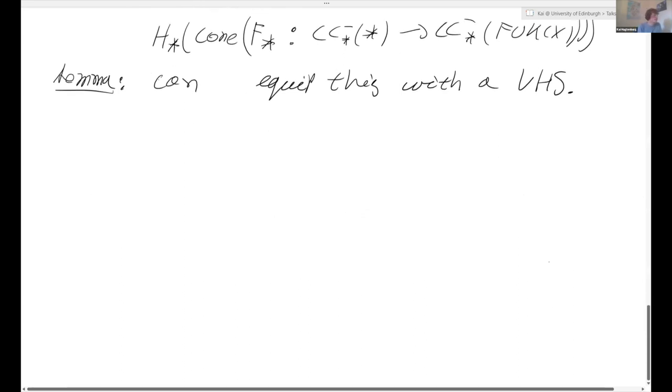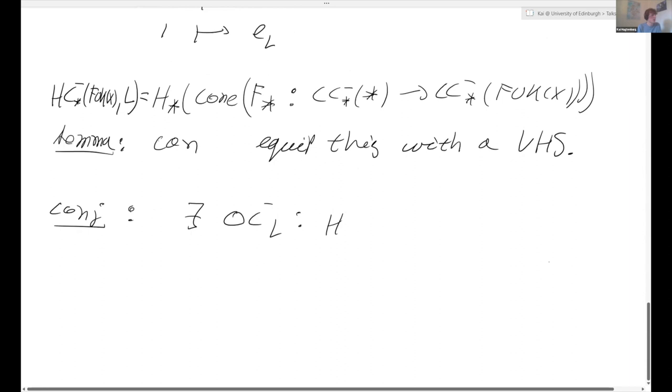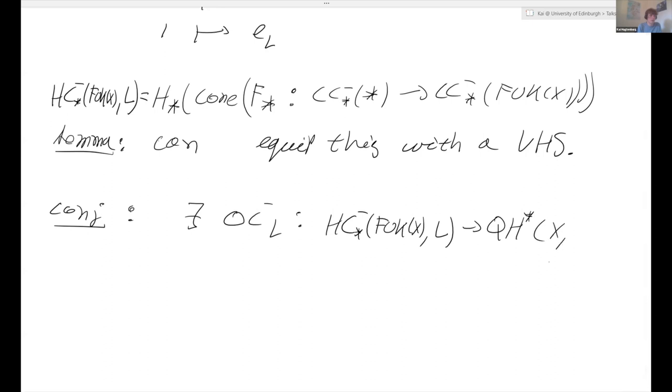So then the natural conjecture to make is that then indeed there exists a map, which is called the relative cyclic open-closed map, that maps, let me give this a name. Well, it's the negative cyclic homology of the Fukaya category of X, relative to the Lagrangian L. There exists a natural map that maps this relative negative cyclic homology to the relative quantum VHS. And this should be an isomorphism of VHS.